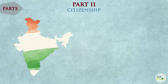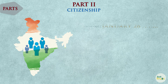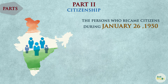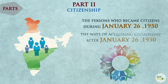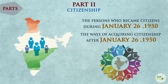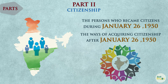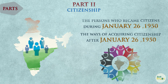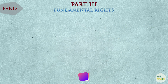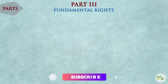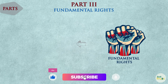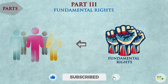Part 2 of the Constitution deals with citizenship. It classifies the persons who became citizens at the commencement of the Constitution, that is January 26, 1950, and the ways of acquiring citizenship after January 26, 1950.